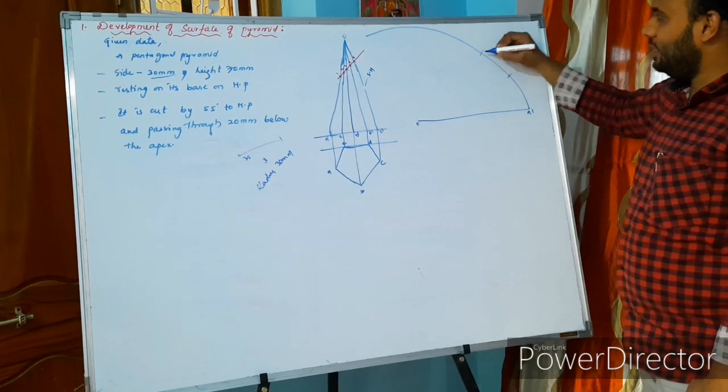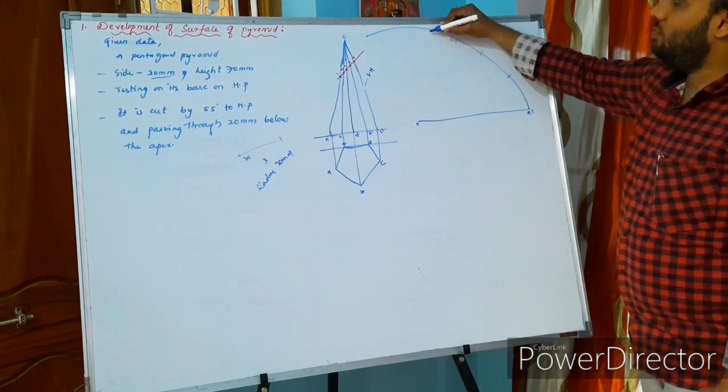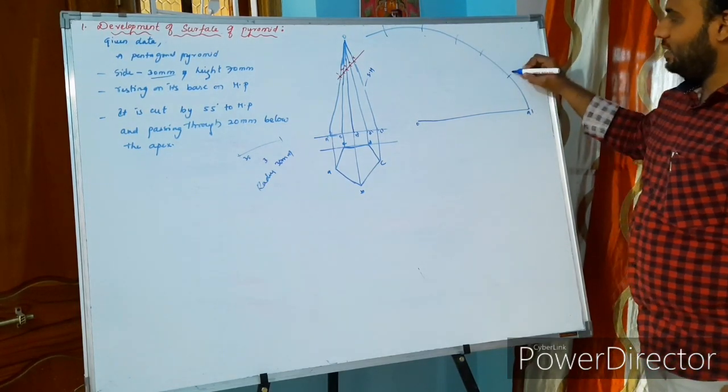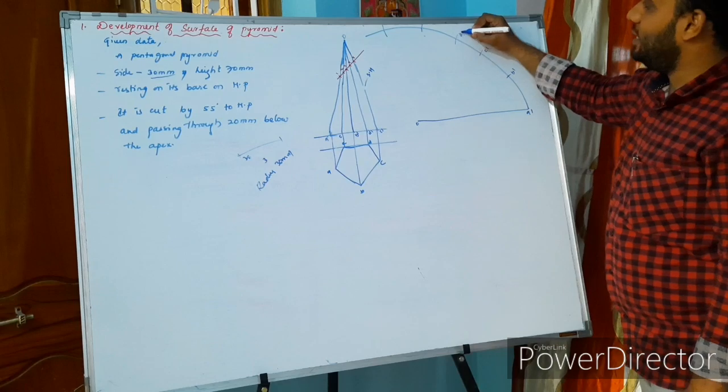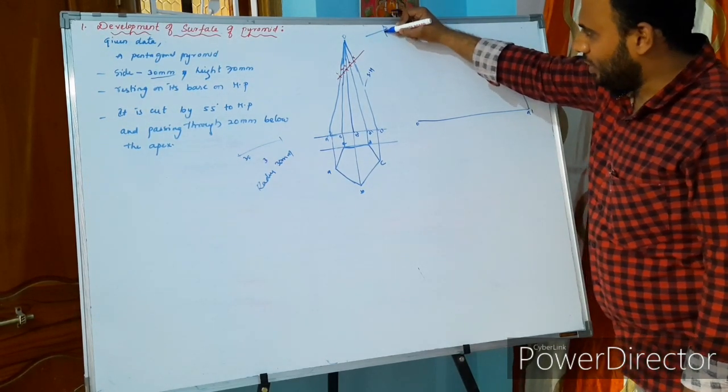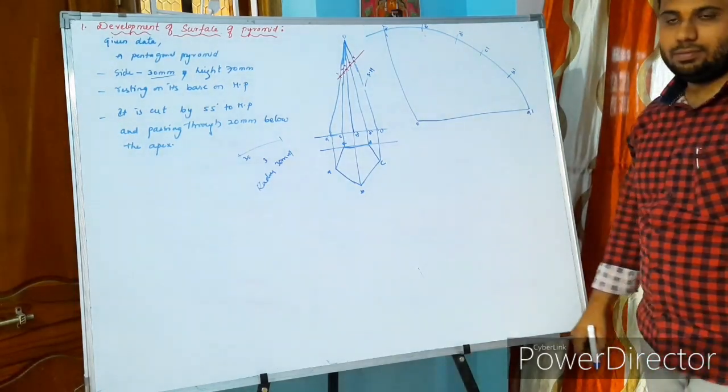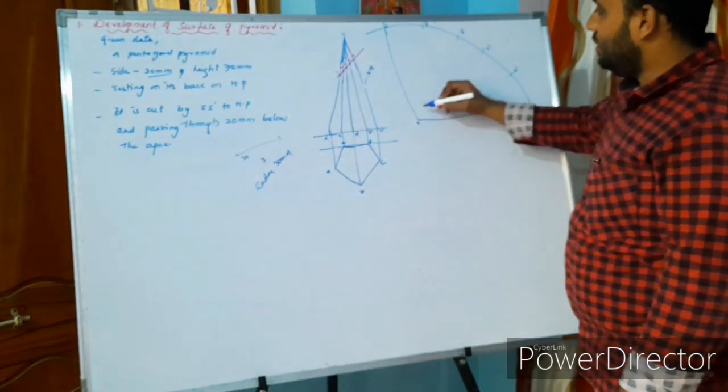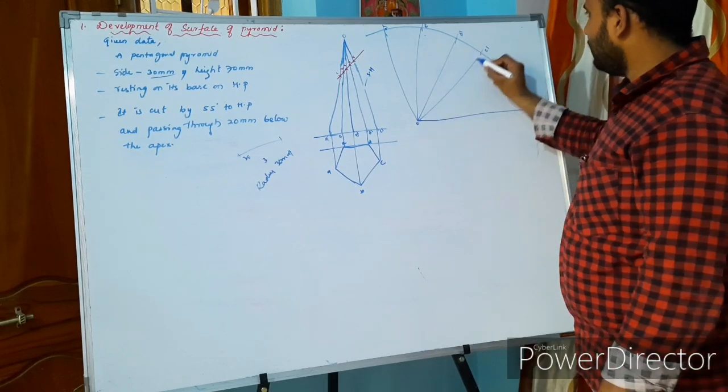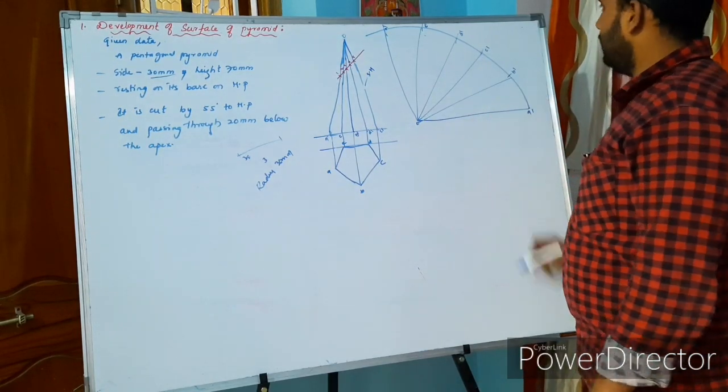Indicate A dash, B dash, C dash, D dash, E dash, again A dash. From here, join direct to O. Next, from O join all points. As it is pentagonal prism, its sides are in a straight way, it is not curved. So join with straight lines.